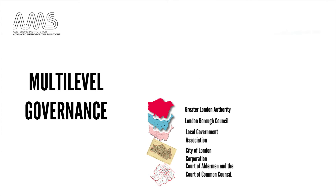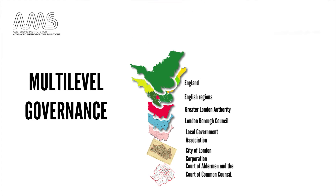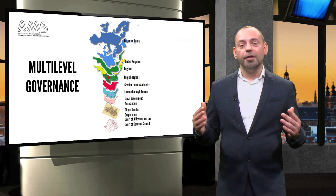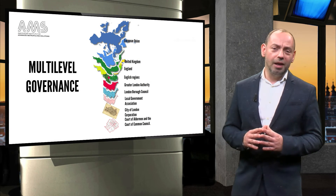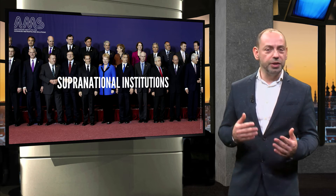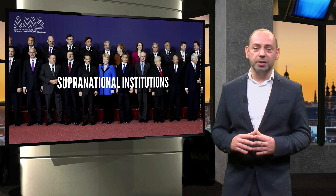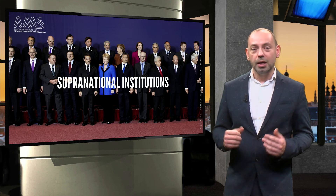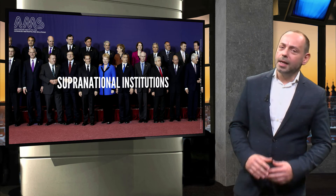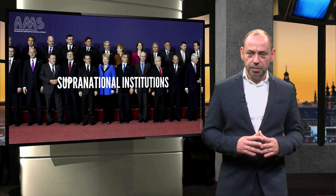The Greater London Authority belongs to the Council of English Regions, and belongs to the nation of England, and to the United Kingdom, and finally to the European Union. The European Union is not even the largest of all stakeholders involved. The EU has to abide by international treaties and supranational institutions, like the United Nations, the International Monetary Fund, and the World Bank. This has consequences on energy management and caps on carbon emissions, for example.